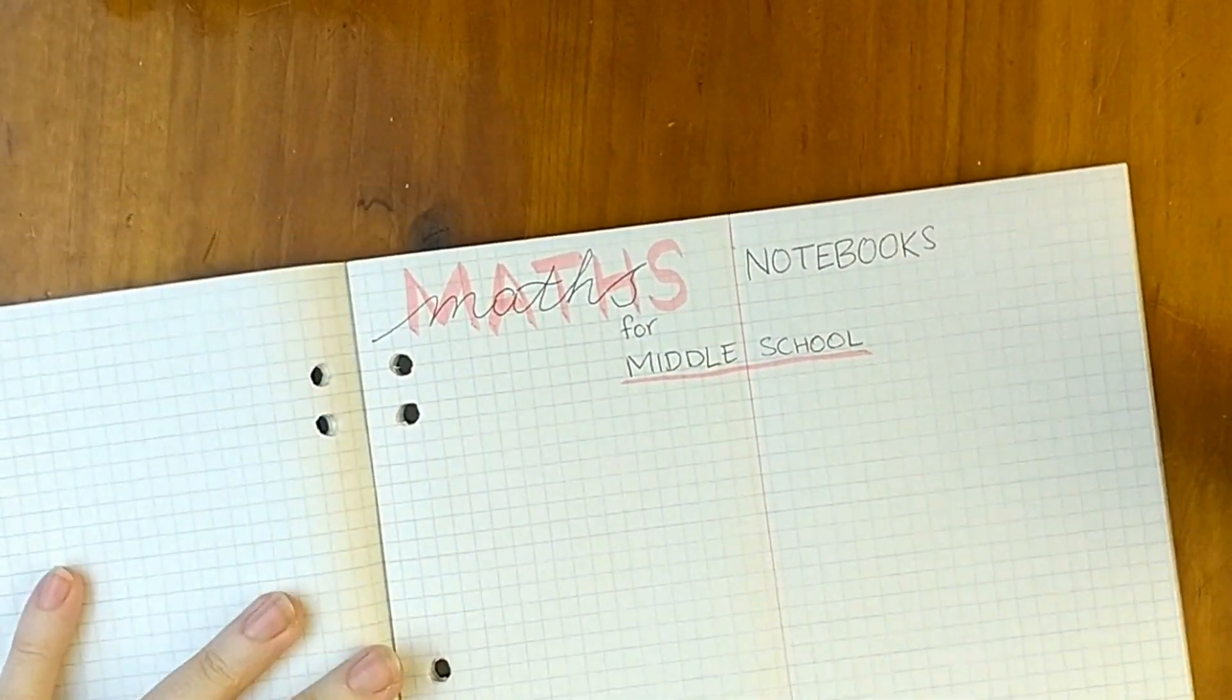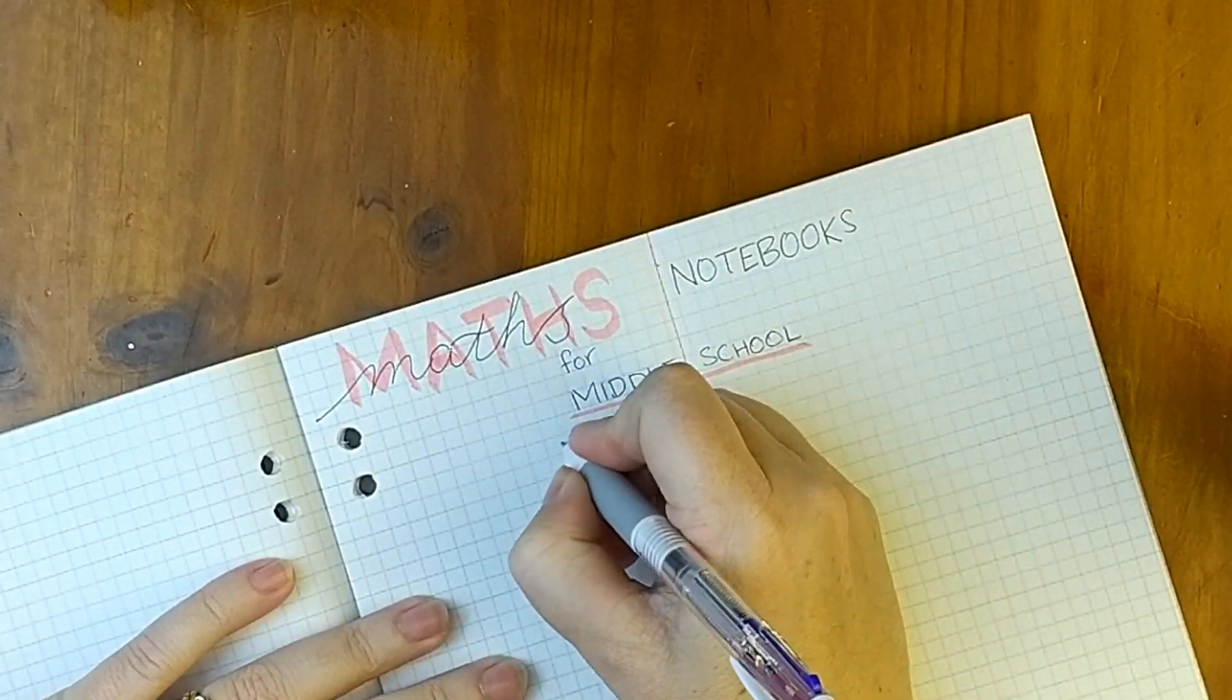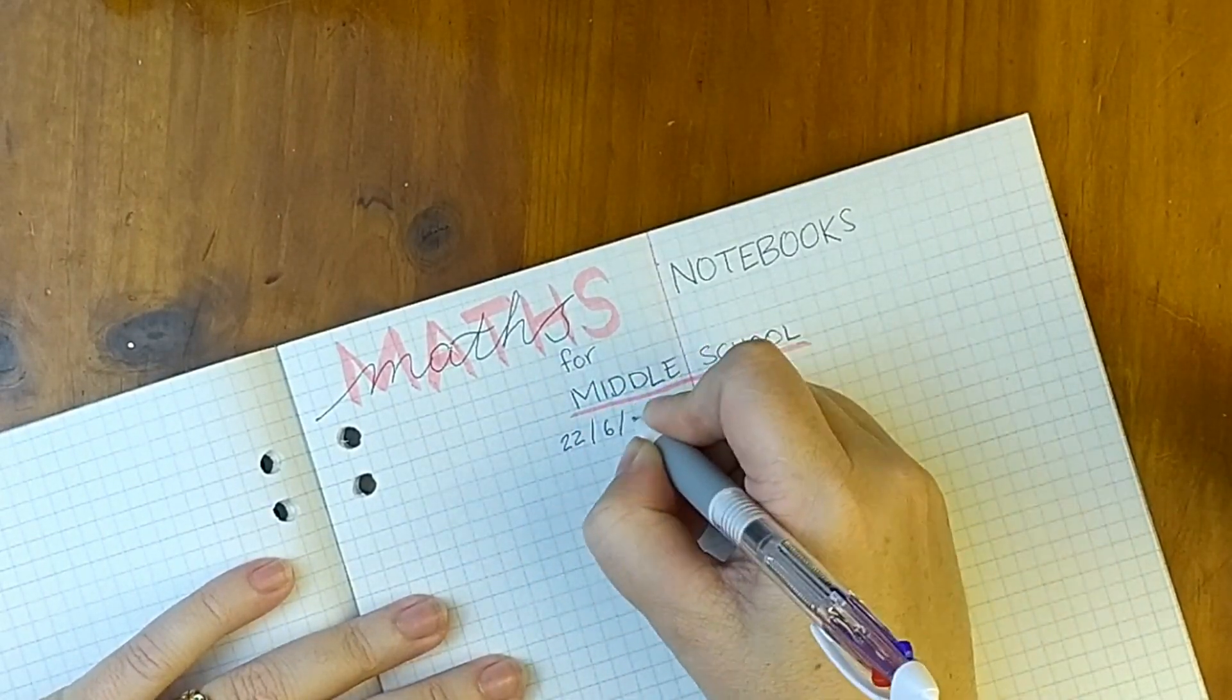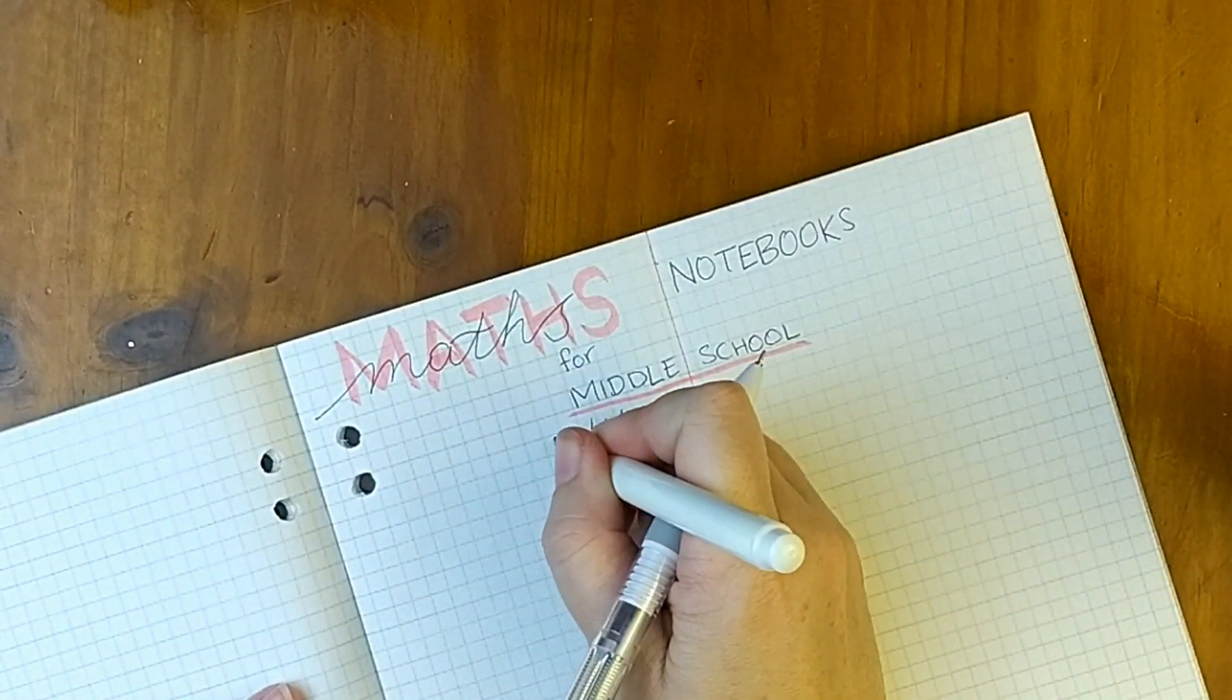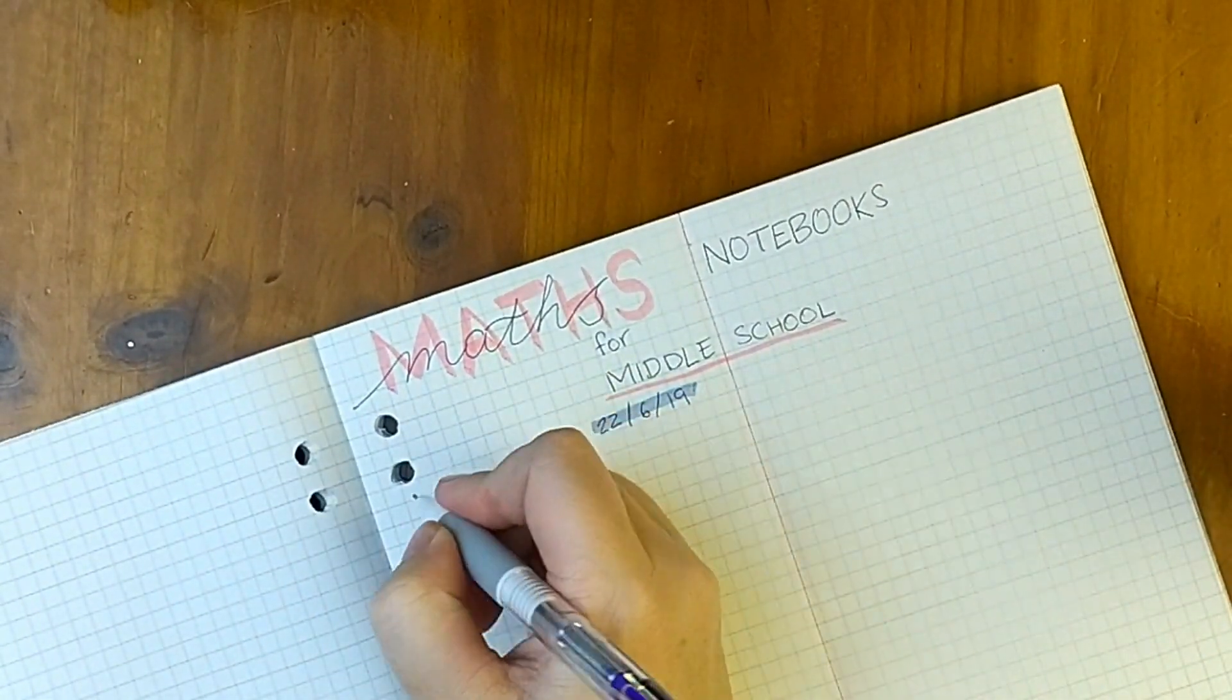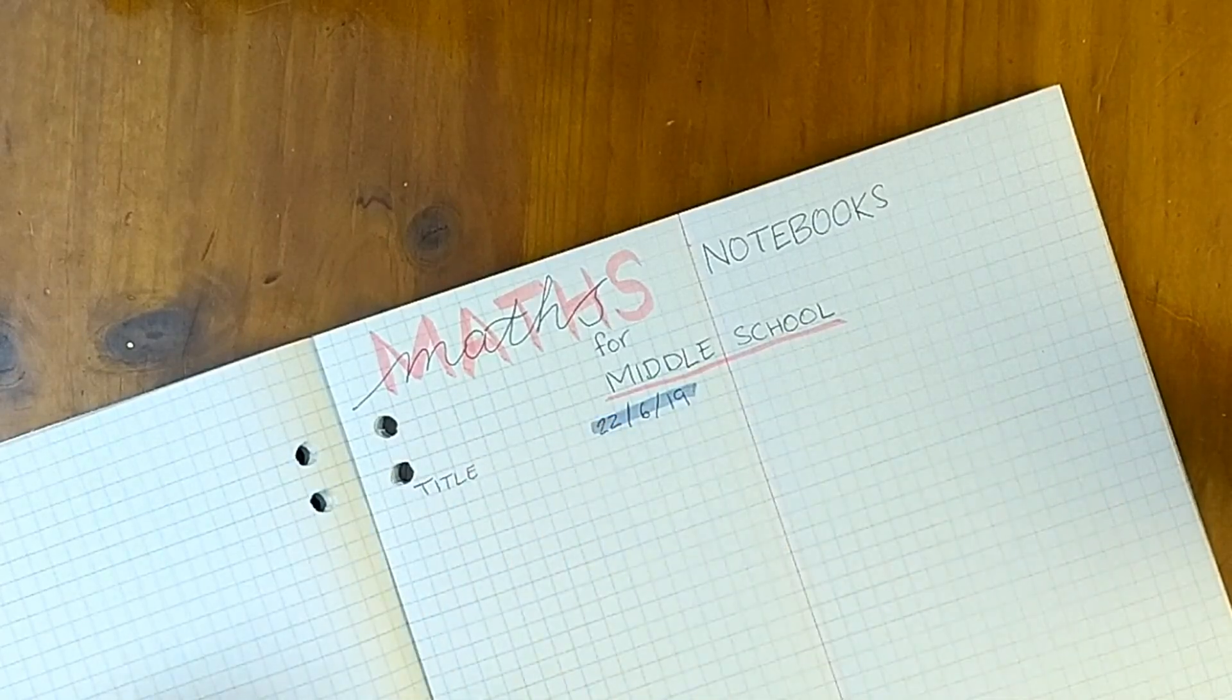First thing we're going to do is we're going to write the date. Being maths we're going to write it numerically. And we're going to either highlight or underline it. And we're going to do the same thing with our title, highlight or underline.